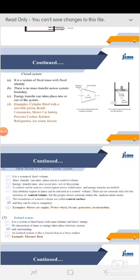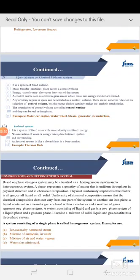The isolated system is a system of fixed mass, fixed identity, and fixed energy. Isolated means no heat and mass transfer can take place — there is no interaction of mass or energy between the system and surrounding. An isolated system is like a closed shop in a busy market. A system is called isolated when no flow of heat, work, or mass takes place across its boundary. A basic example is a thermos flask where we store hot water — when filled and no mass is taken out, it remains hot. Another example is gas enclosed in an isolated box.